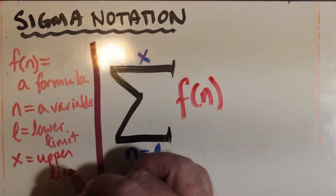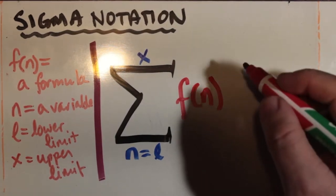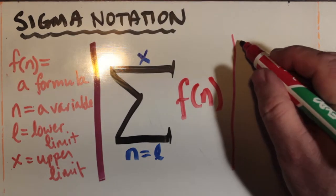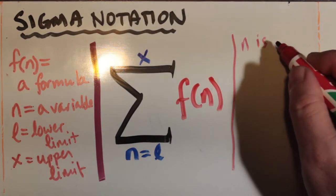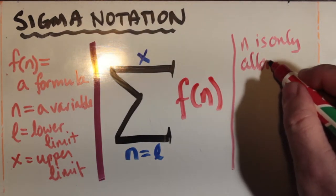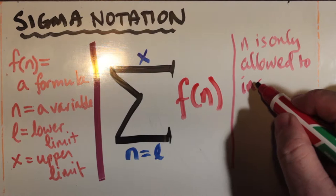We could have called it something else, but we're calling that the upper limit or how high n can go. So n is restricted by only taking on values between l and x, the upper limit and the lower limit. In front of that, we put some formula which contains n and we're just calling that f of n or f with n in brackets.